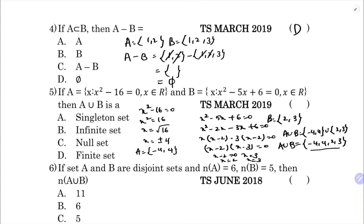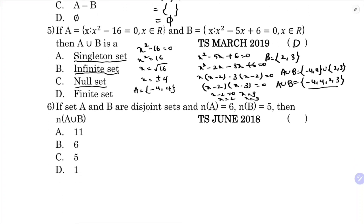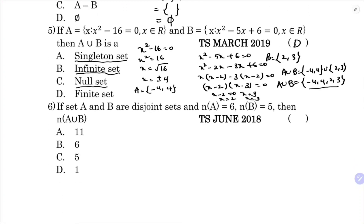A union B has 4 elements. A singleton set has only one element, an infinite set continuously adds elements, and a null set has no elements. Since we have exactly 4 elements, the correct option is D: finite set.